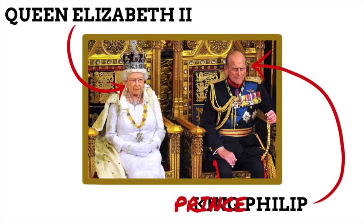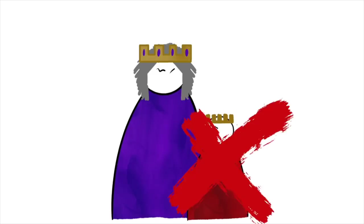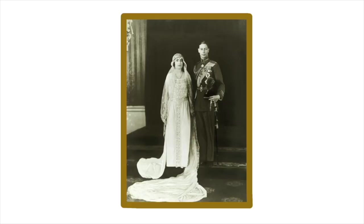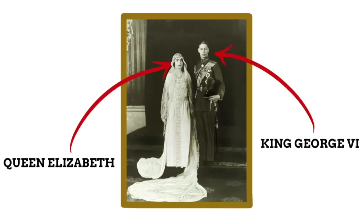This sounds odd, as traditionally a prince is the son of a queen — though Philip isn't the queen's son, that would be odd. The queen's husband isn't always called prince, either. The previous queen of the UK was also called Queen Elizabeth, and her husband was called King George the Sixth. So what's happening here? Why is the current queen's husband not called king?